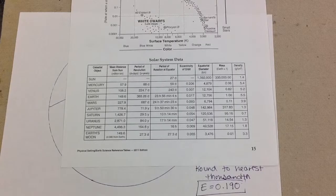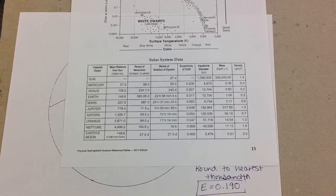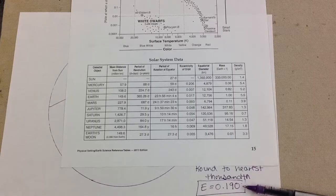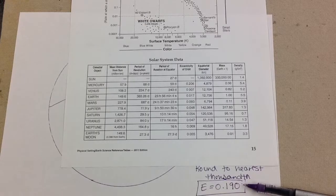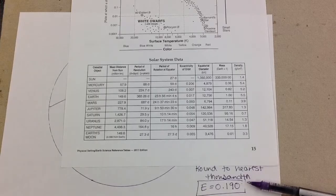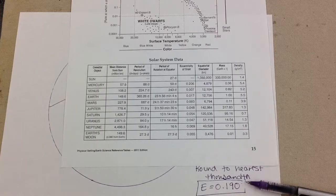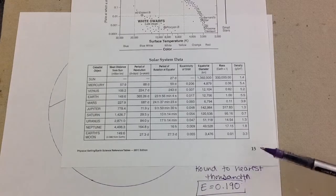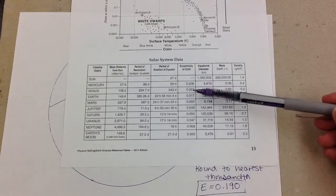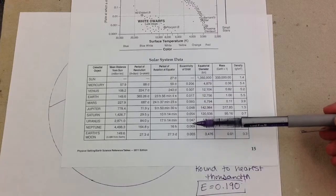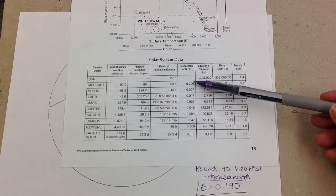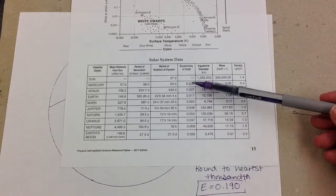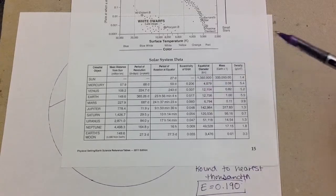So the question becomes, if you take a look at our value that we calculated, the 0.190, which planet's eccentricity value is this ellipse that we created close to? So you come up here and you look and you scan through, and if you look, you can see that we're really close to Mercury's eccentricity of its orbit.